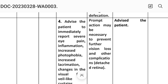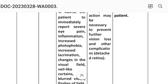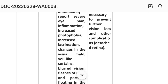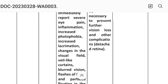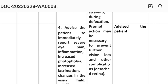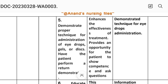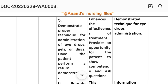Fourth intervention: advise the patient to immediately report severe eye pain, inflammation, increased photophobia, increased lacrimation, changes in the visual field such as curtain-like appearance, blurred vision, flashes of light, and particles floating in the visual field. Rationale: prompt action may be necessary to prevent further vision loss and other complications such as detached retina. Fifth intervention: demonstrate proper technique for administration of eye drops, gels, or discs; have the patient perform a return demonstration. Rationale: enhances the effectiveness of treatment and provides the patient an opportunity to show competency and ask questions.